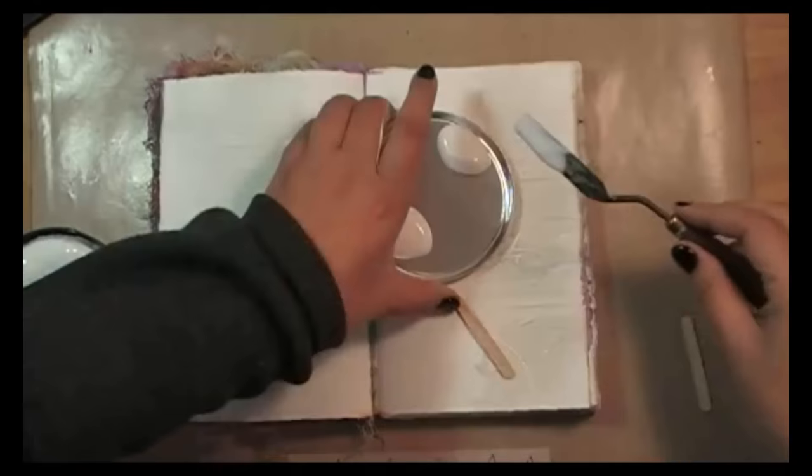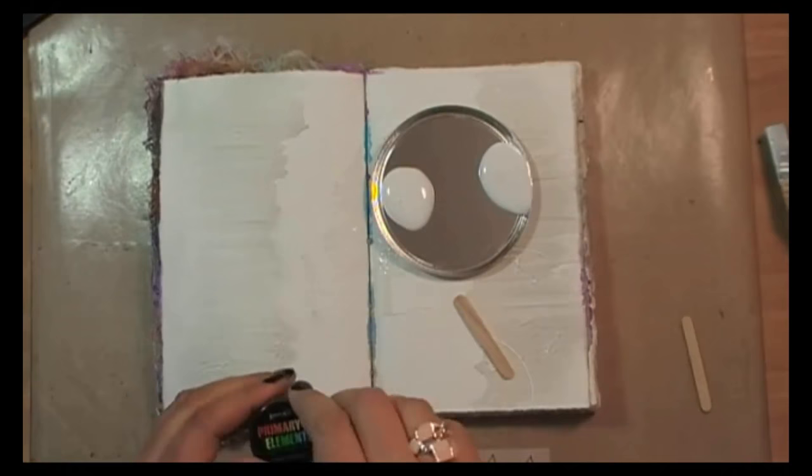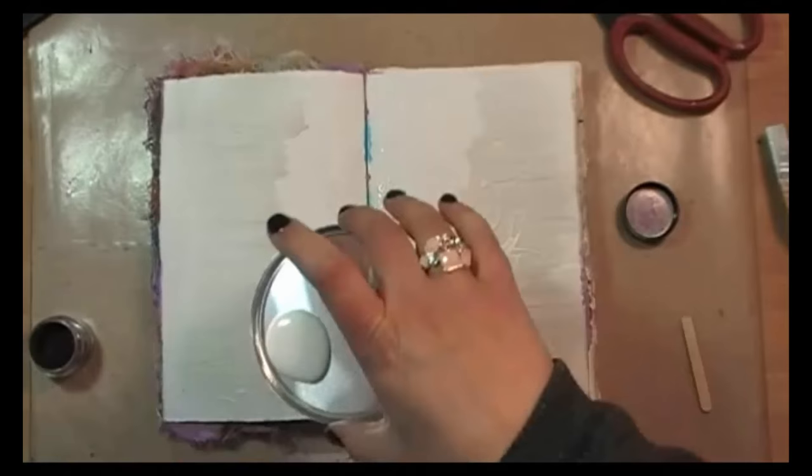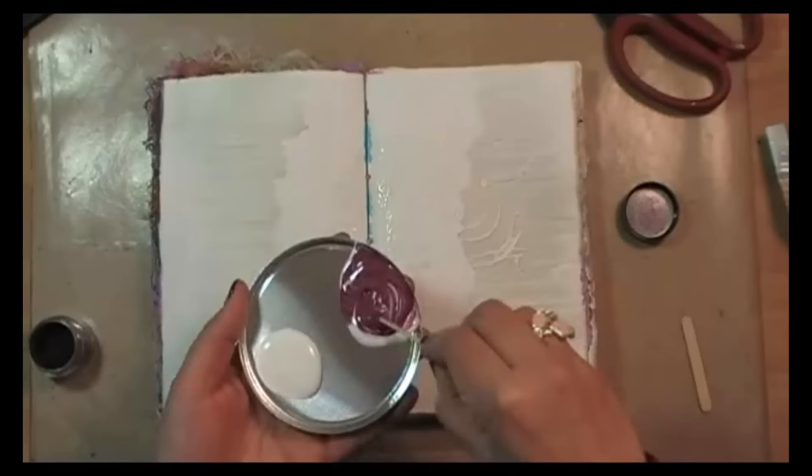To add color, I decided to mix some stuff together. First I'm taking some soft matte gel and I want to make two colors, so I have two little piles. To that I'm adding pigments, Primary Elements, a dark one and a lighter one.